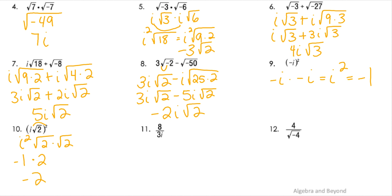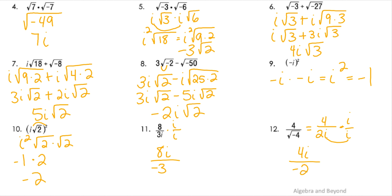In this next one, the problem is that the i is in the denominator, so I'm going to multiply by i over i. That gives me 8i over 3i squared, which is really just negative 3. And lastly, we've got the square root of a negative in the bottom. So 4 on top, square root of 4 is 2, and the square root of negative is i. Now I've got to multiply it by i over i to get rid of that. So in the numerator I have 4i, and in the denominator I have 2i squared, which is negative 2.